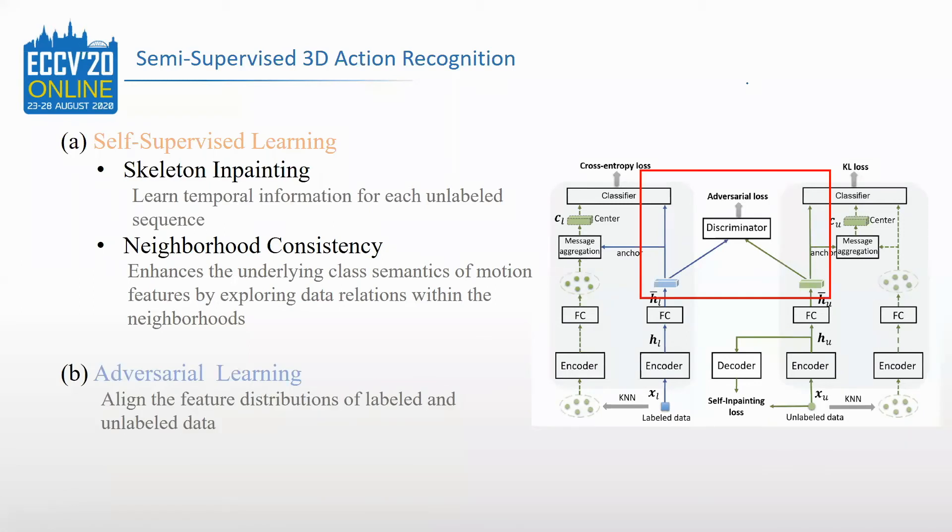We also find that directly applying self-supervised learning for semi-supervised learning suffers from the misalignment of representations learned from self-supervised and supervised learning tasks. This space misalignment would weaken the generalization of semi-supervised 3D action recognition models to unseen samples. So, we propose to use adversarial training to couple self-supervised learning into semi-supervised learning, which can align their feature distributions.